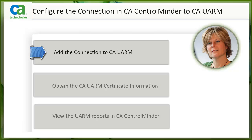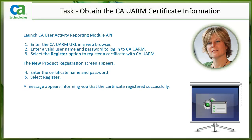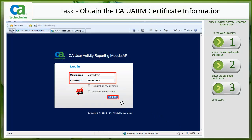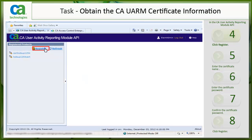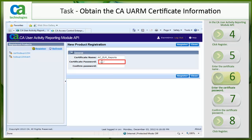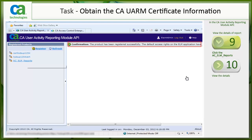We just added the connection in CA Control Minder to CA UARM. To obtain the CA UARM certificate information, follow these steps. I will demo these steps in the next few slides. You may choose to pause the slide by clicking the pause button below to read through the steps. Click login. Click on the register link. Enter the certificate name. Enter the certificate password. Confirm the certificate password. Click register. A confirmation appears that the product has been registered.